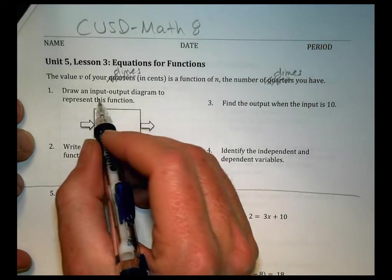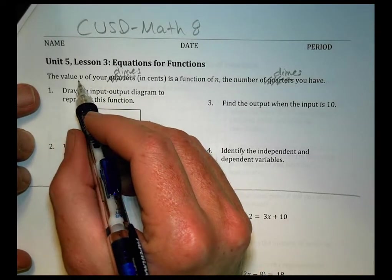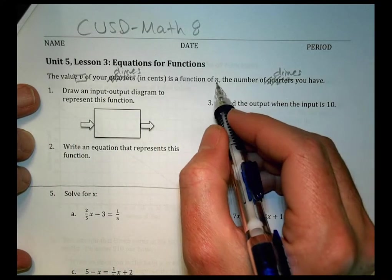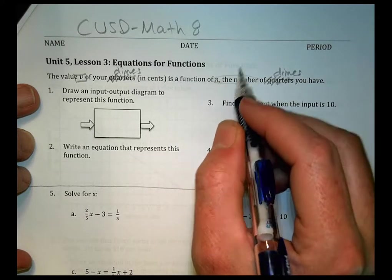Draw an input-output diagram to represent the function. The function says the value V of your dimes in cents is a function of N, the number of dimes.